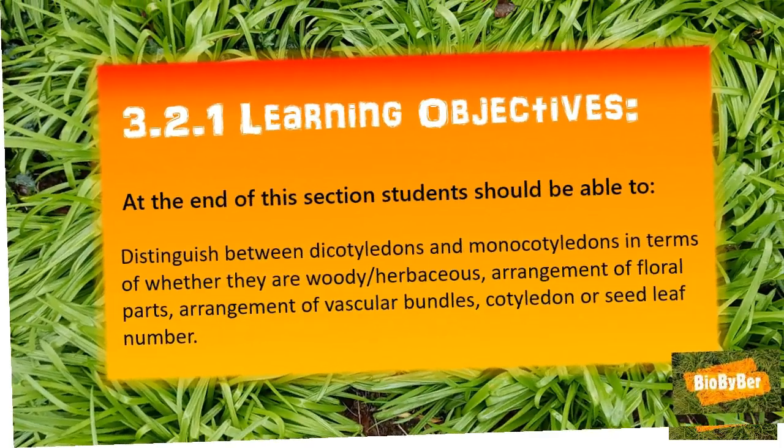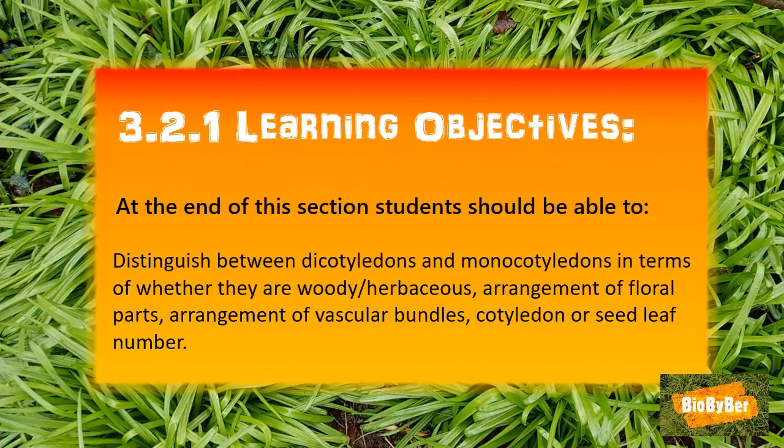Now that we've reached the end of our lesson, have we achieved our objective? Are you able to distinguish between dicotyledons and monocotyledons in terms of whether they are woody or herbaceous, arrangement of floral parts, arrangement of vascular bundles, and cotyledon or seed leaf number?